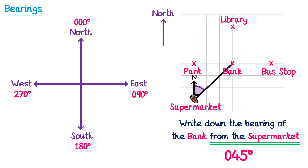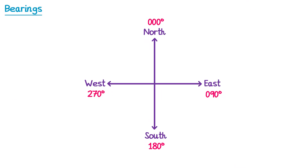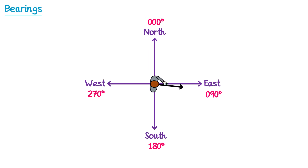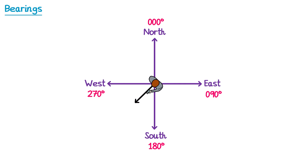This is to illustrate that we don't just assign bearings to north, south, east, and west. In fact, you can have a bearing of any amount of degrees. So if we place ourselves facing north and then turn through a small angle, this bearing would be 027. If we turn to another angle, this bearing would be 100. This bearing just before south would be 173. This bearing over here would be 225. And you could even do a bearing of 333. So we can do a bearing of any amount of degrees.